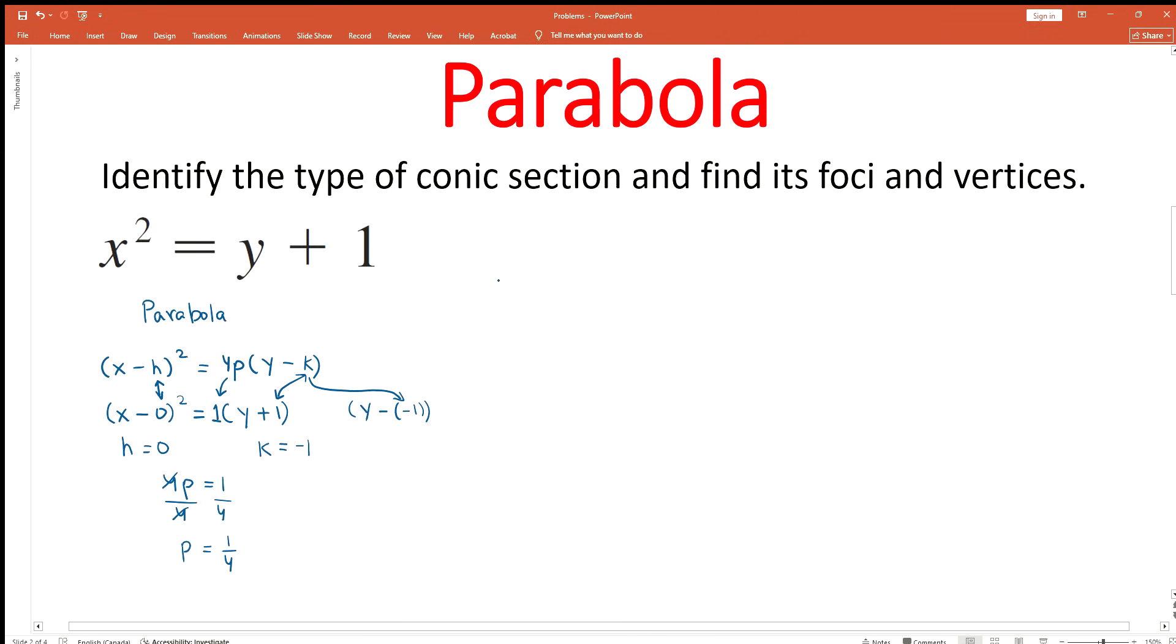Since p has a positive value, that means this parabola opens in the upward direction. Now we can use this analysis. The vertex of the parabola is (h, k) = (0, -1). So the vertex of this parabola is (0, -1).